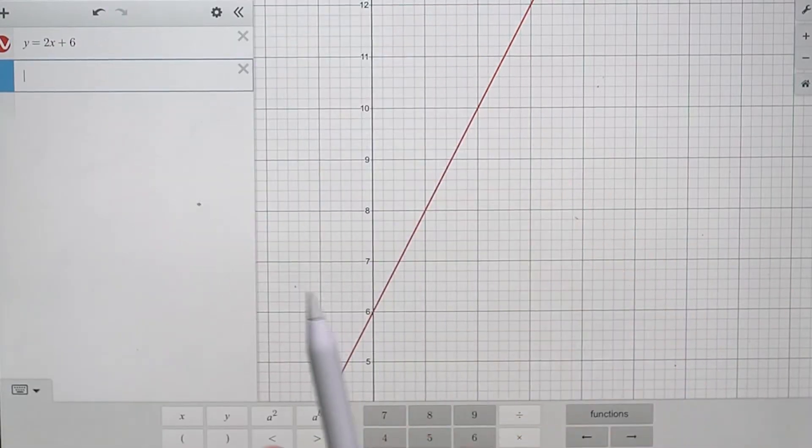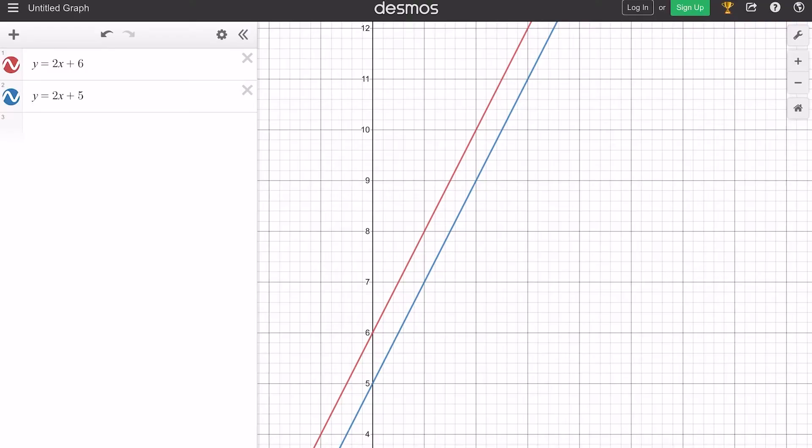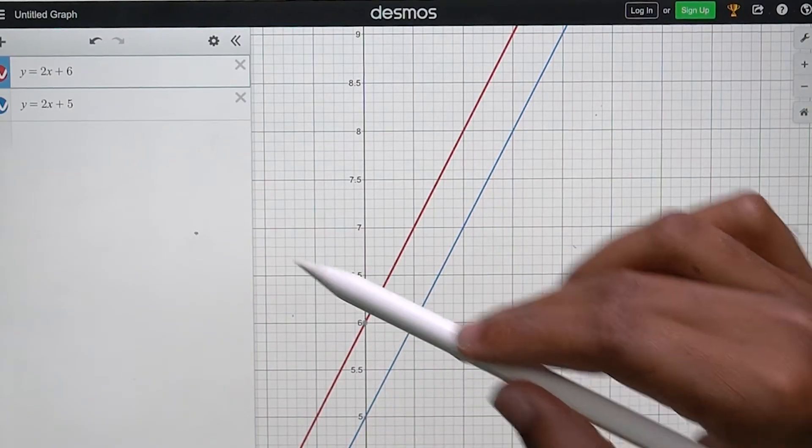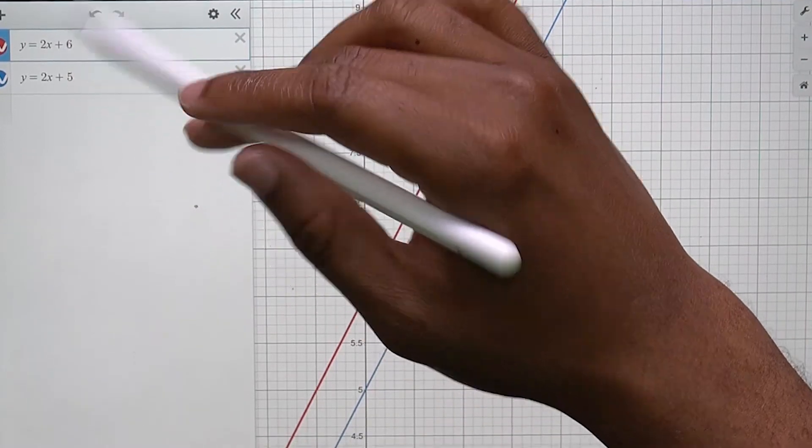So let me just write out both lines. The blue line is described by y equals 2x plus 5, but the red line is y equals 2x plus 6. So this number here seems to be controlled by this number on the outside.